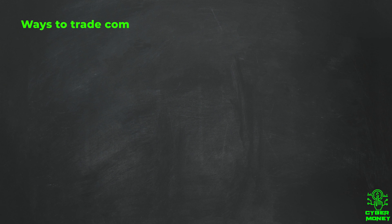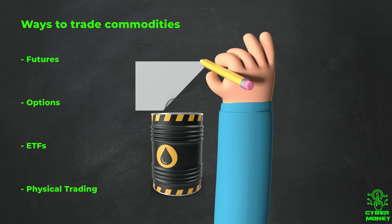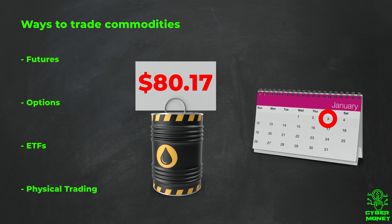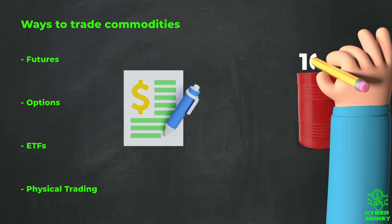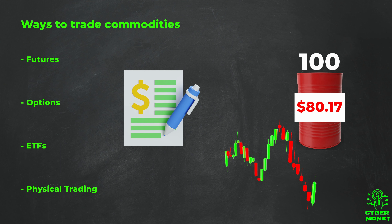There are different ways of trading commodities, like futures, options, ETFs, and physical commodity trading. They all follow the same basic principle: buying and selling a standardized amount of a specific commodity at a particular price and at an exact time. Commodities are usually traded in standard contracts — each contract represents a specific amount of the underlying commodity and the price is determined based on current market conditions.